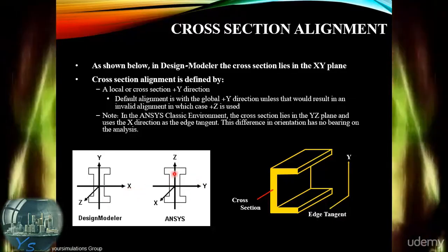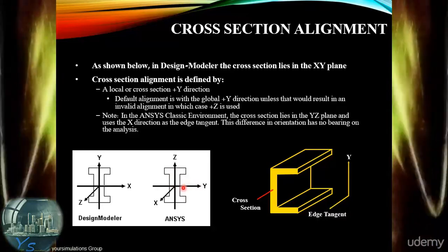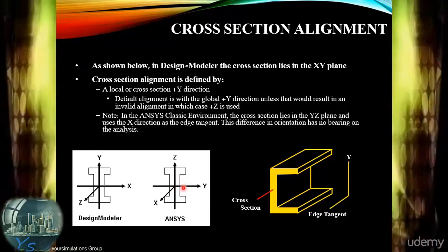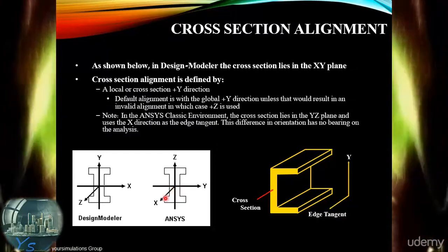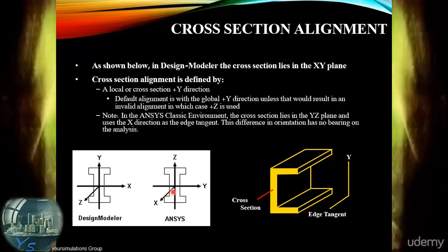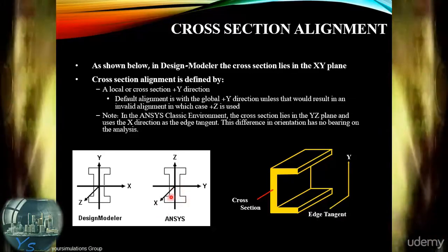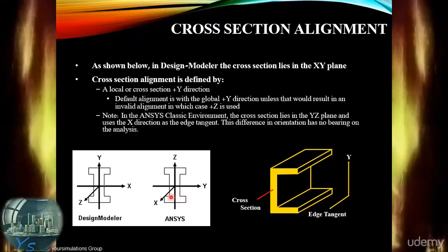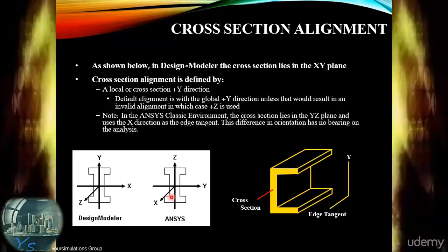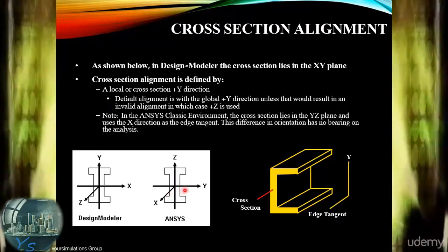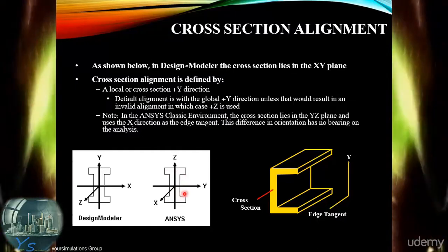We can look at some of the alignments in order to make sure the cross-section is aligned correctly in later operations. It's important to note that in ANSYS Classic, the cross-section lies in the YZ plane and uses the X direction for tangency. However, the orientation should have no bearing on the analysis as long as the cross-section is defined and aligned correctly.